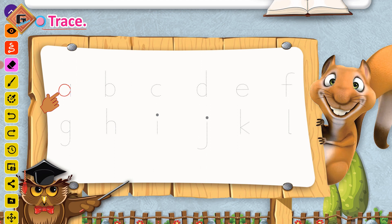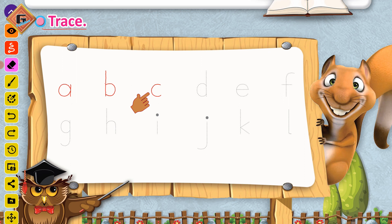Aur waapis jayen, straight line lagayen — yeh hamara letter A ban gaya. Ab is dot pe pencil rakhenge, straight line banayenge, aur ab iski belly banayenge. Dots ko aapas mein join karte jayenge — yeh ban gaya B. Aur ab hum banayenge C. Is dot pe pencil rakhenge, dots ko aapas mein join karte jayenge — yeh ban gaya C.